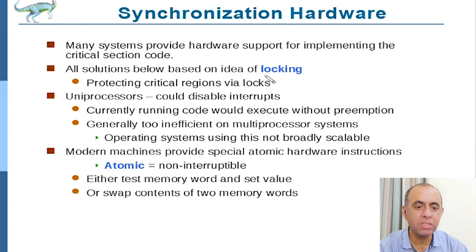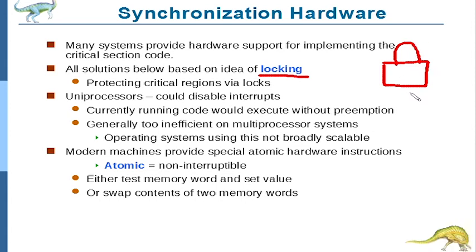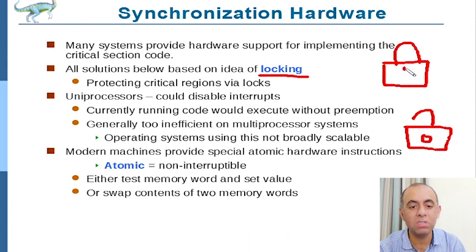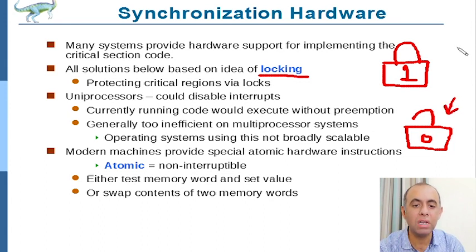The solutions are based on the idea of locking. We have a hypothetical lock — a single entity held by one process. There are two states of the lock: either the lock is open, like a padlock in the open state — let's call it zero — or there's the locked state where the lock is one. We say lock is not acquired and is free, or the lock is acquired by some process and is locked.